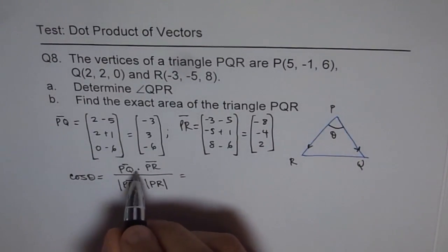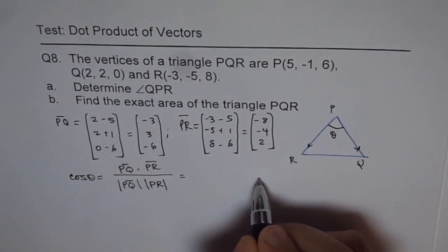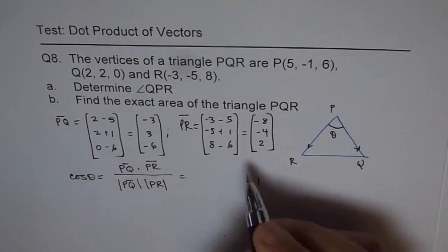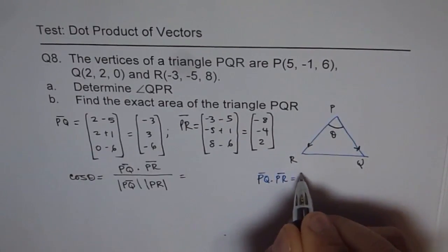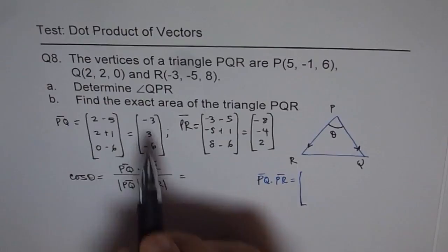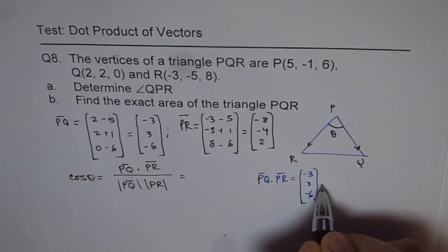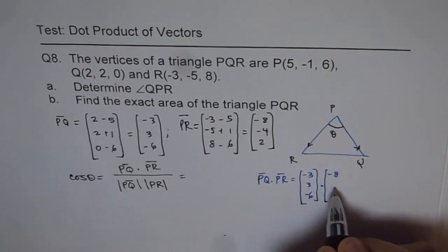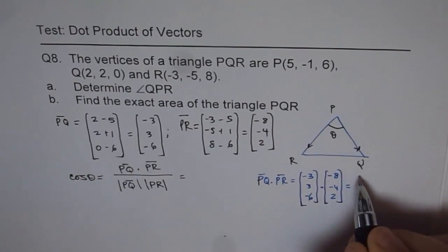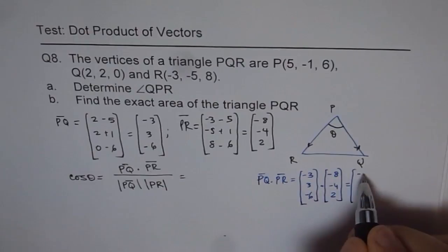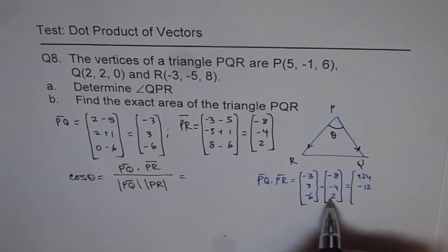PQ dot PR. This is PQ, this is PR. So we are doing (-3, 3, -6) dot (-8, -4, 2). Now that gives us minus twenty-four plus twenty-four minus twelve, and this is minus twelve.